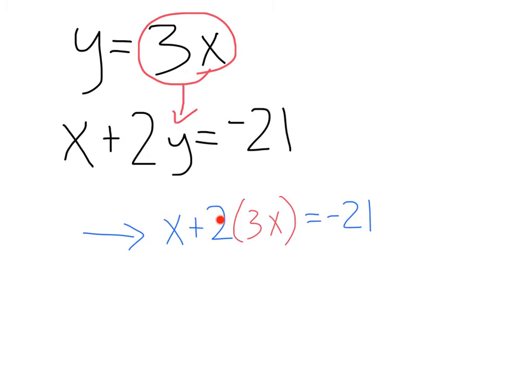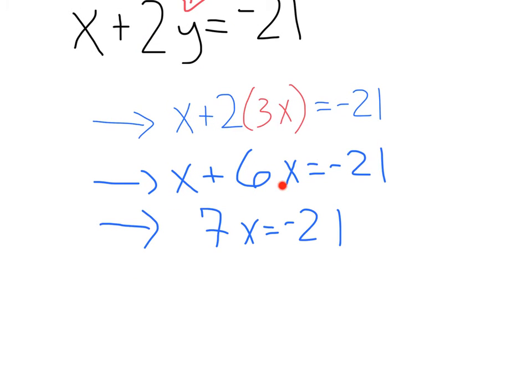Doing that, we'll get x plus 2, instead of y, 3x equals negative 21. Now we can just solve this like normal for x. That's going to give us x plus 6x, doing 2 times 3x equals negative 21. Combining these x's, x plus 6x is 7x equals negative 21. And dividing out the 7, we're going to get x equals negative 3.